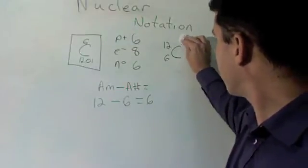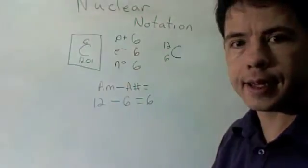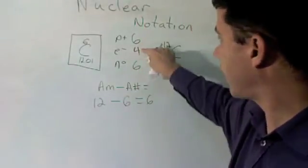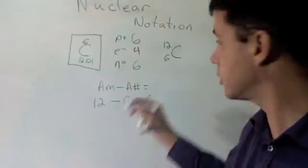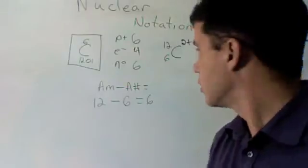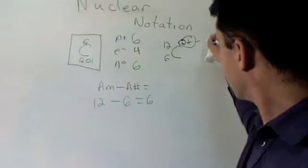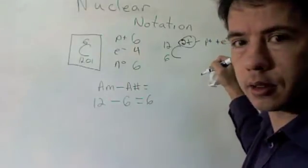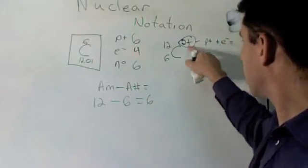Now, what if instead of going from six to eight, it went from six to four. I now have two more protons than electrons. So I have two more positives, which would be two plus. So to find this number, it's just protons plus electrons. And electrons are always negative equals that number.